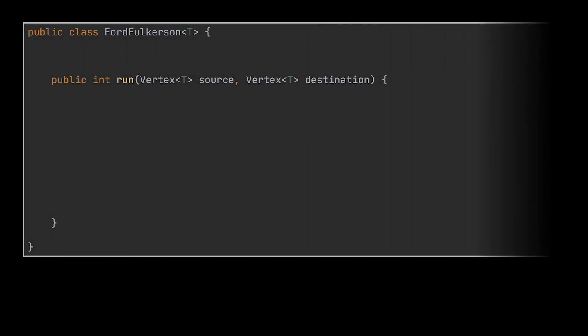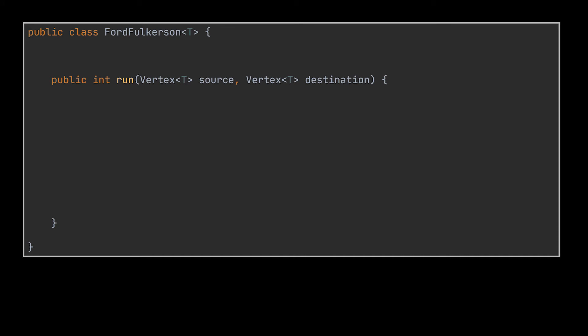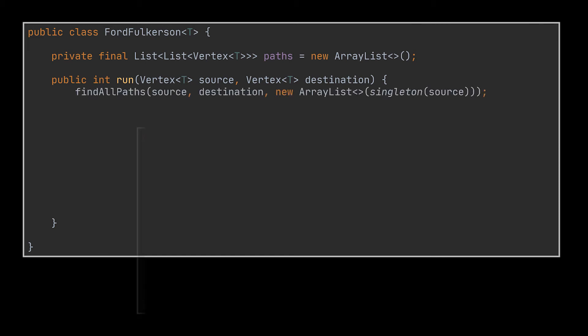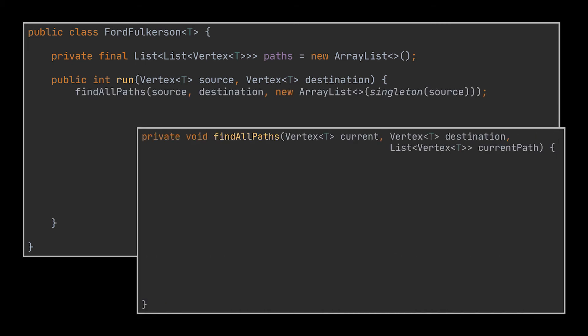Now let's go ahead and tackle the Ford-Fulkerson class alongside its run method. Similarly to what we discussed, the first thing we did was retrieve all the paths from S to T. And to store these paths I created a private list of lists which will hold all the paths we fetch.